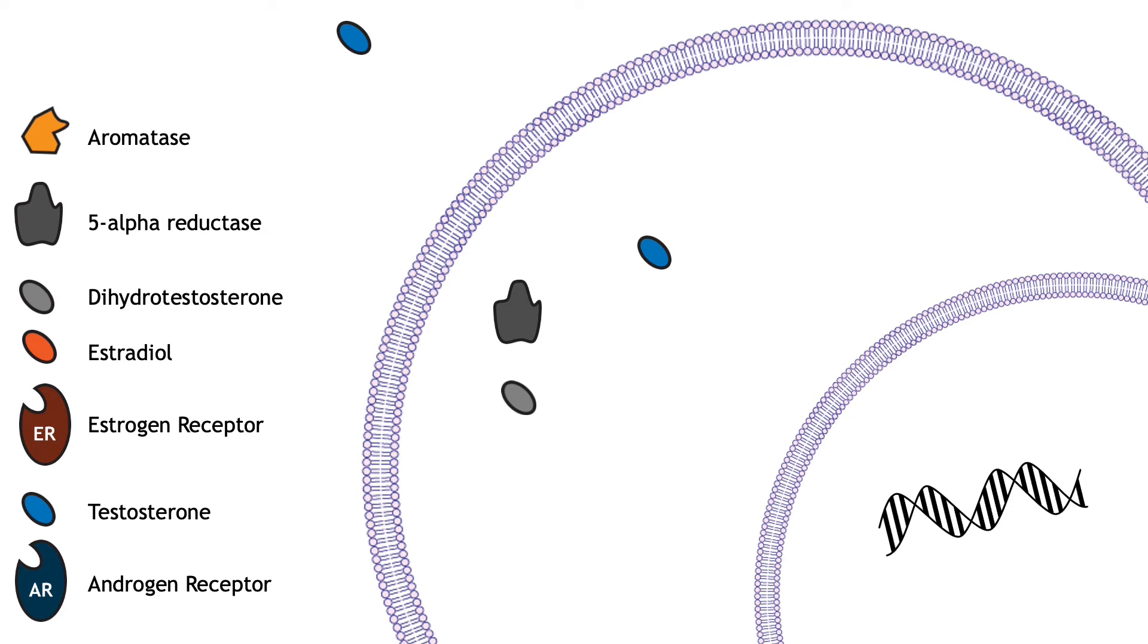The enzyme aromatase converts testosterone into estradiol, an estrogen that can bind to the estrogen receptor. In some mammals, like rodents, this conversion of testosterone to estradiol is the main process by which neurons in the brain are masculinized.